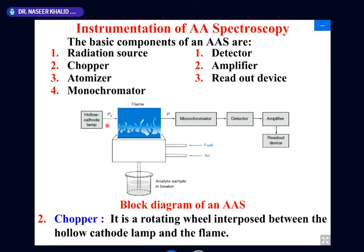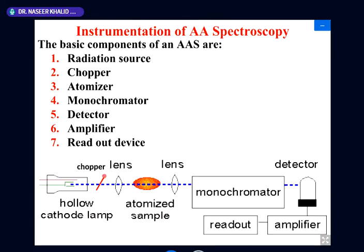The chopper is a rotating wheel placed between the source and atomizer, as shown on the previous slide. It is a half-coated mirror rotating at very high speed. When one portion is in place, no radiation passes through it directly — instead the radiation is reflected and directed along a separate path, combining at the monochromator. When radiation passes in this direction, it acts as the reference beam.